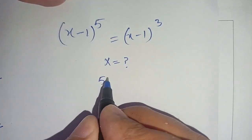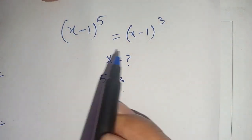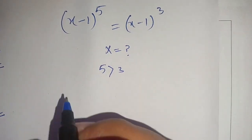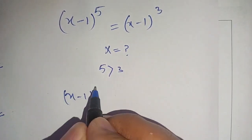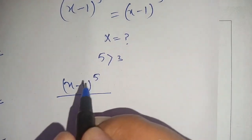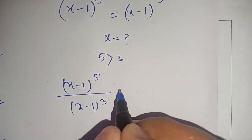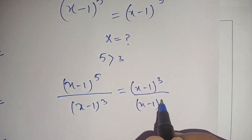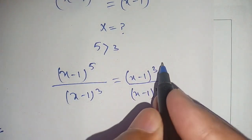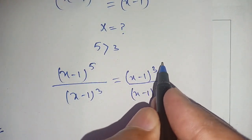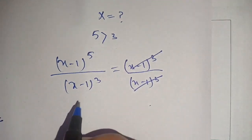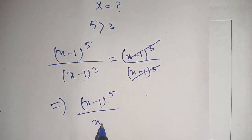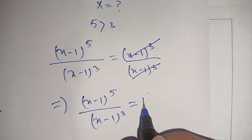Since 5 is greater than 3, I am dividing both sides by (x minus 1) raised to power 3. We get (x minus 1) raised to power 5 divided by (x minus 1) raised to power 3 is equal to (x minus 1) raised to power 3 divided by (x minus 1) raised to power 3. We can cancel out (x minus 1) raised to power 3 on both sides, giving us (x minus 1) raised to power 5 divided by (x minus 1) raised to power 3 is equal to 1.